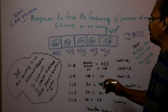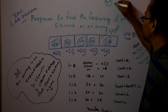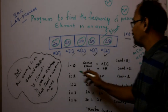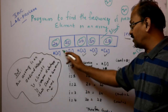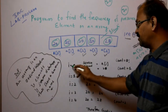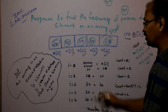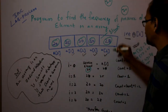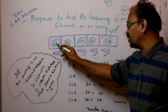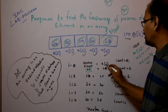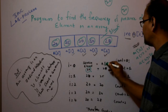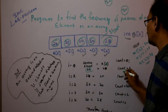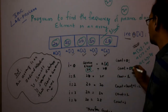For example, I will enter the value 20 as the search element. So when I compare, the first location is A[0]. A[0] is 20, and the search element is 20, so 20 is equal to 20 — the condition is true. When the condition is true, a counter variable will be incremented to 1.